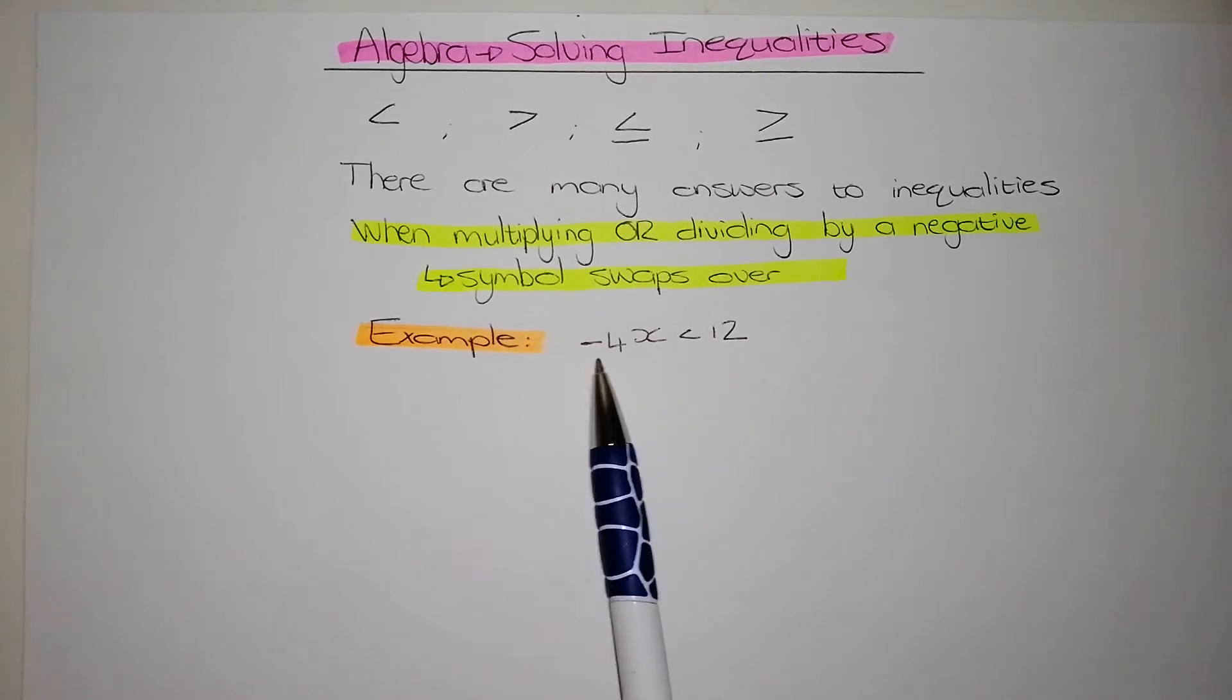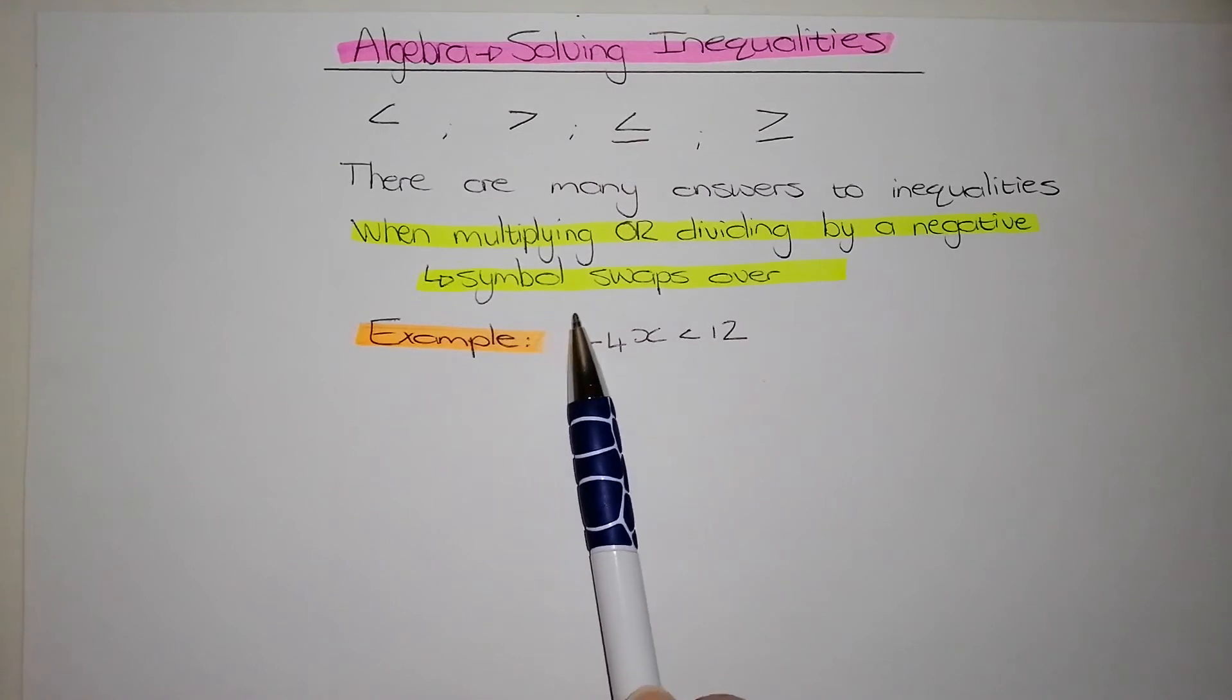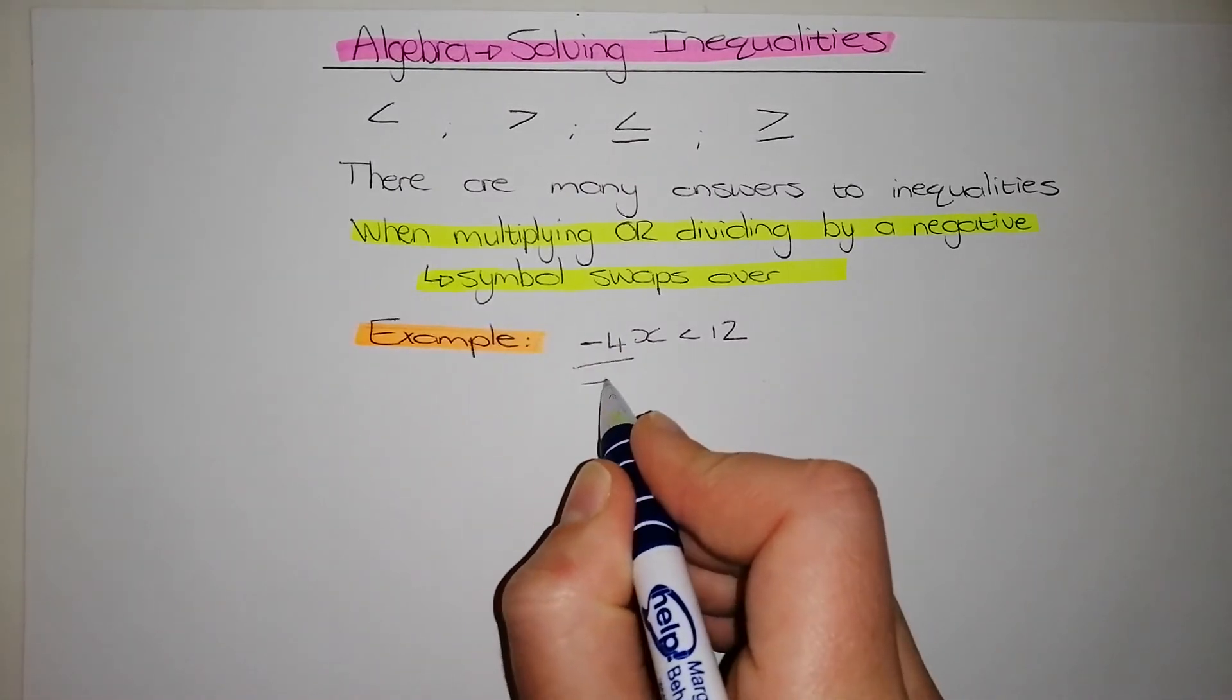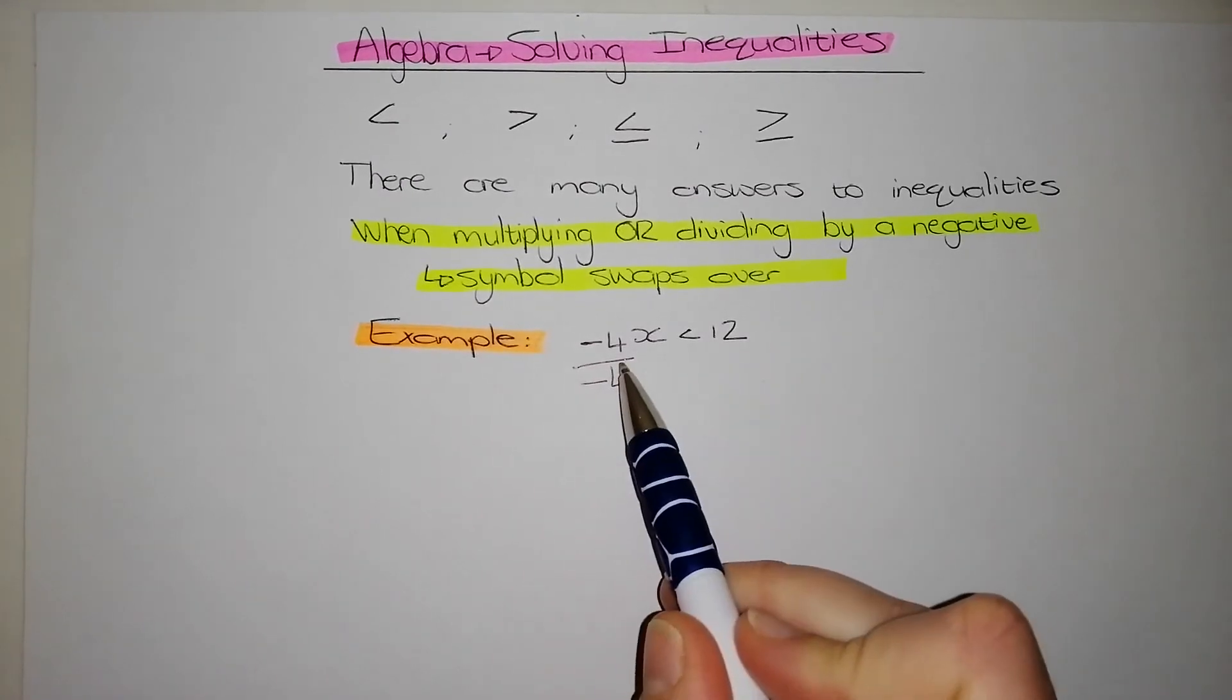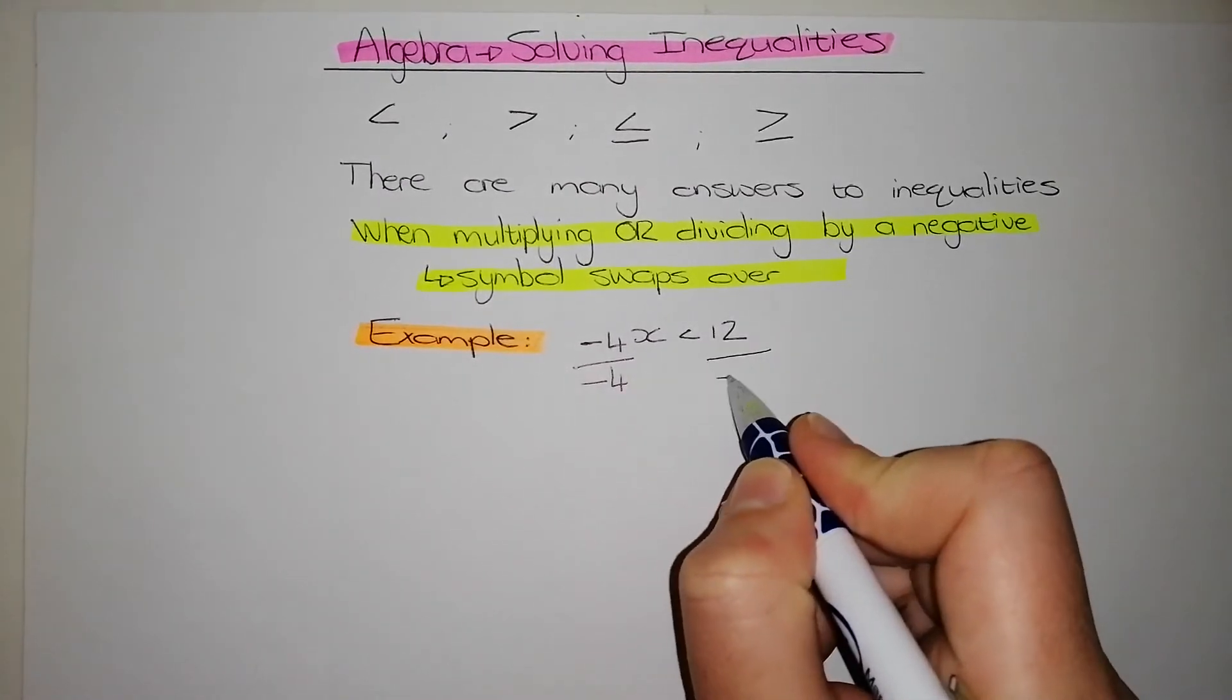What do we need to do to get rid of this negative 4? We need to divide it by negative 4 because it's the opposite of what is happening right now. So I need to divide by negative 4 on this side. When I do it on the left, I need to do it on the right as well.